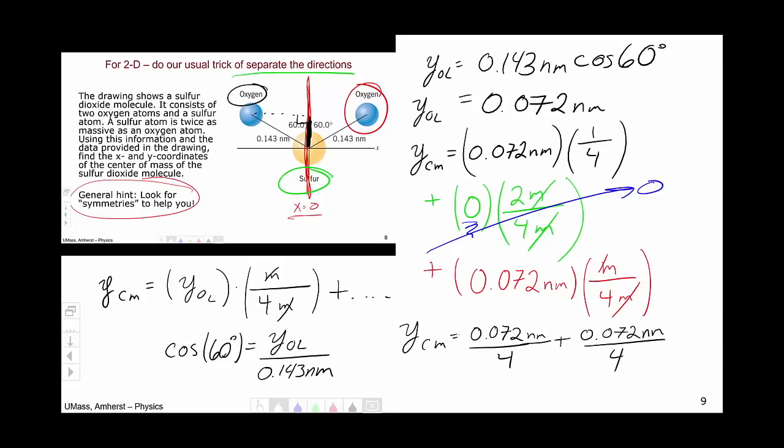Leaving us with a y center of mass of 0.072 nanometers over 4 plus 0.072 nanometers over 4. In this case, both are positive and so they add as opposed to cancel like last time. And we are left with a vertical position of 0.036 nanometers.